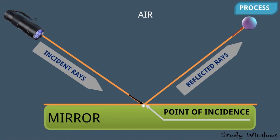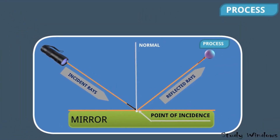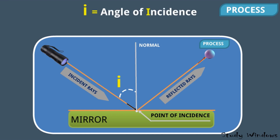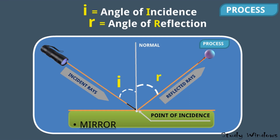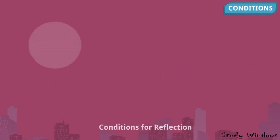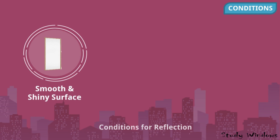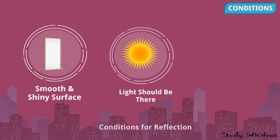A perpendicular line at the point of incidence on the mirror is known as the normal. The angle between the incident ray and the normal is the angle of incidence, and the angle between the reflected ray and the normal is the angle of reflection. For reflection to occur, the surface should be smooth and shiny — like a mirror, water surface, or shiny metals — there should be light, and the object should be opaque.